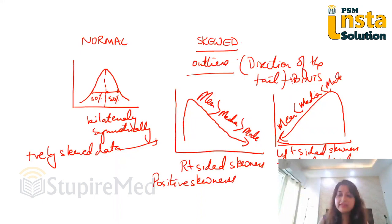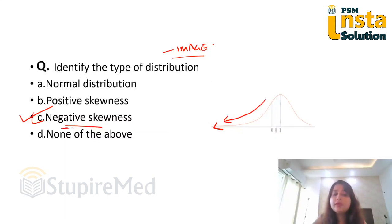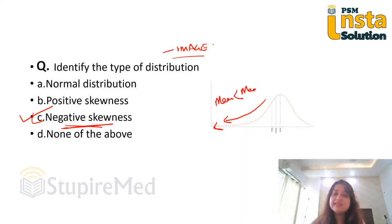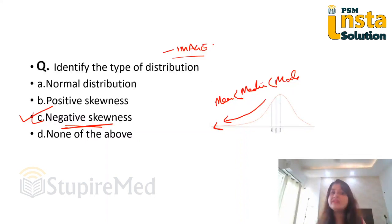So now let us look at this MCQ again. Where is the direction of the tail pointing to? It is pointing towards the left side. So it becomes a negatively skewed data. And for this, my mean statistically is less than median is less than mode. They can directly ask you the interpretation or they can give you an image and ask you to mark the answer. I hope you've understood. This is a very important repeated question from biostatistics.